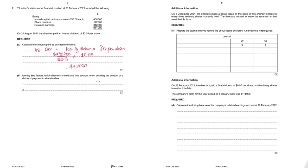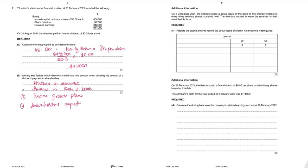Identify two factors directors should consider when deciding the dividend amount. First, the balance in revenue reserves (general reserve and retained earnings) — insufficient reserves means no dividend can be paid. Second, the balance in cash and bank — insufficient cash means the dividend cannot be paid regardless. Additionally, directors could consider future growth plans (retaining cash for expansion) or shareholder expectations. Any two valid points are acceptable.